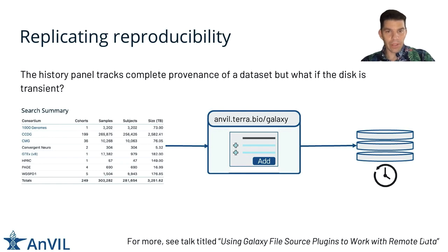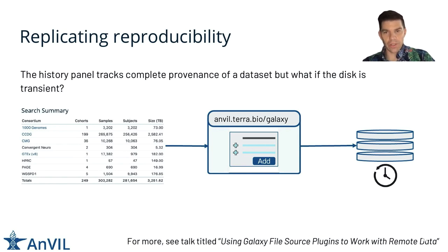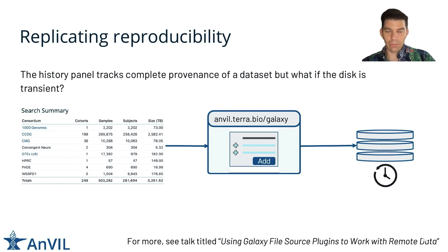For replicating reproducibility, you would think history is enough — but what if the disks that Galaxy runs on are transient? Here we have to architect Galaxy to first allow it to ingest data from ANVIL itself. ANVIL houses over three petabytes of interesting data sets, and so in Galaxy you can now browse these data sets from within the Galaxy interface, select the ones you would like to work on, and have them saved on persistent disks within your own environment. You can come back at a later time, recreate the same Galaxy environment, and hence gain the benefits of reproducibility. There's a full-length talk on this topic listed at the bottom of the slide — please check it out for more details.